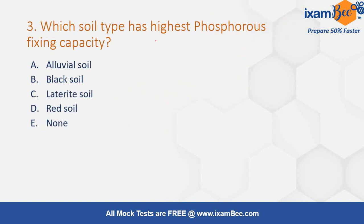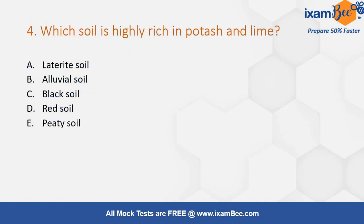Next question: which soil type has the highest phosphorus fixation capacity? The correct answer is red soil, due to the presence of kaolinite clay mineral. Next: which soil is highly rich in Potash and Lime? The correct answer is alluvial soil.